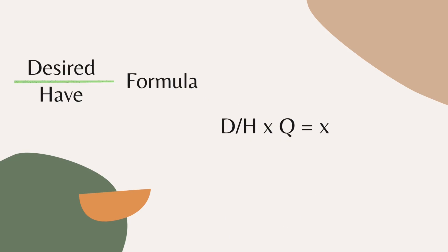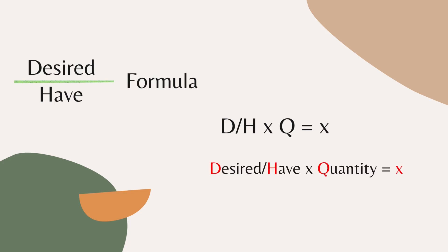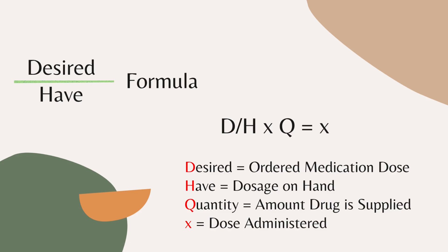Now we're going to get into how to solve dosage calculation problems using the desired over have method. On this slide, I have listed the formula for this method: D over H times Q equals X. The fully written out formula is desired over have times quantity equals X, with X being our answer. When we say desired, that's referring to the ordered medication dose — what was ordered for the patient. The have refers to the actual dosage that you have on hand. The quantity refers to the amount of drug that is supplied. And X will be the dose that is actually administered, or in the context of dosage calculations, it will be our answer.